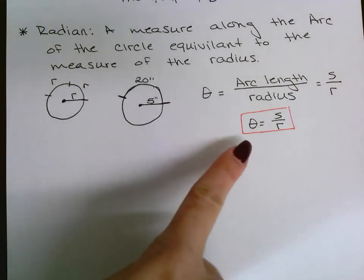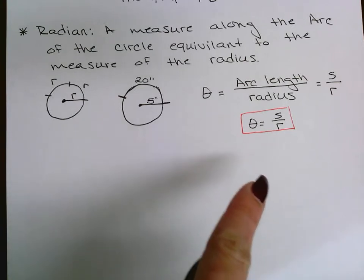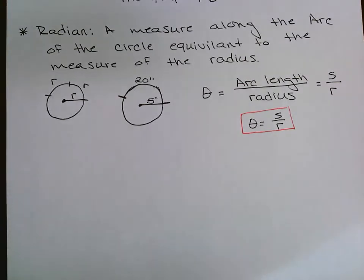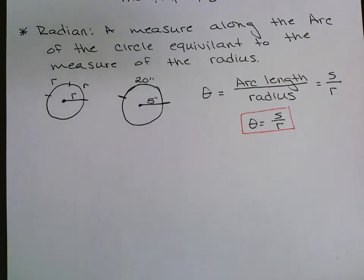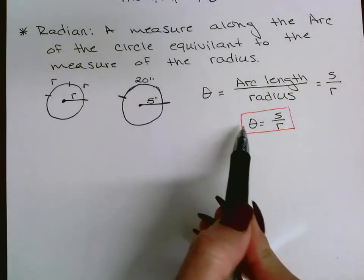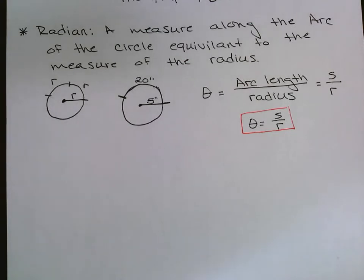Later in this section, you'll see this formula rearranged. Instead of solving for theta, they might ask you to solve for arc length, S. To get S by itself, multiply both sides by R, giving you S equals R times theta. You only need to memorize one formula — it's the same thing rearranged. Moving on to slide 6: converting radians and degrees.